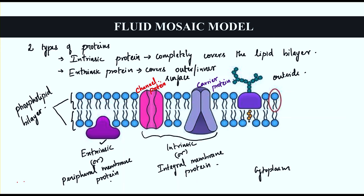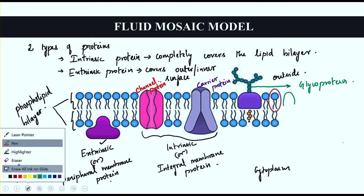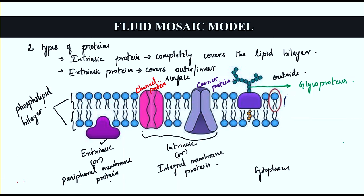The plasma membrane also consists of glycoproteins and glycolipids. A glycoprotein is a protein attached with carbohydrates. A glycolipid is a lipid molecule with an attachment of carbohydrates. These are all part of the complete structure of the fluid mosaic model of the plasma membrane.